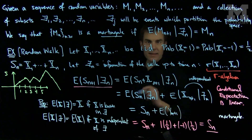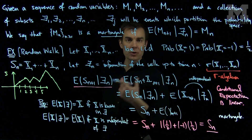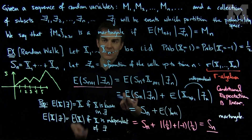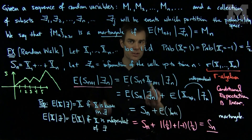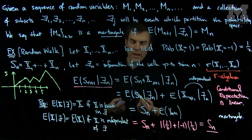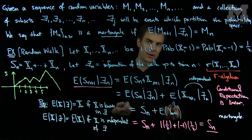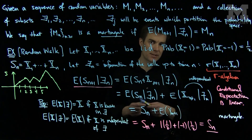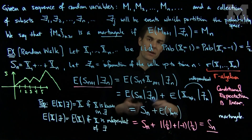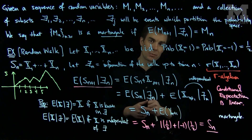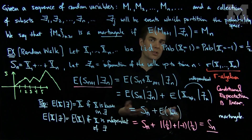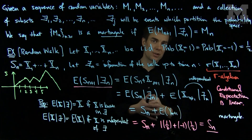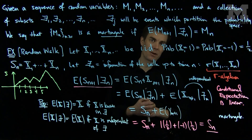We can connect this example with the binomial tree stock price distribution by noting that what we're really doing with the binomial stock price distribution is making some form of random walk. From previous videos, the discounted stock price at time n given a binomial tree distribution also has the martingale property. In future videos, we'll see how we can exploit the properties of martingales to make informed decisions about stock prices. Thank you very much.